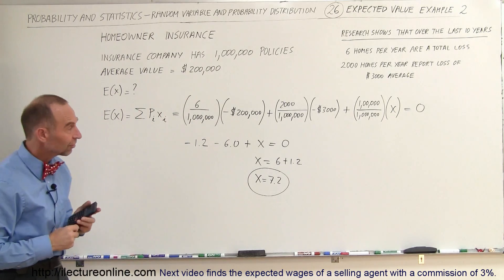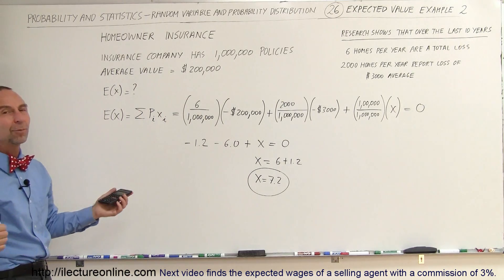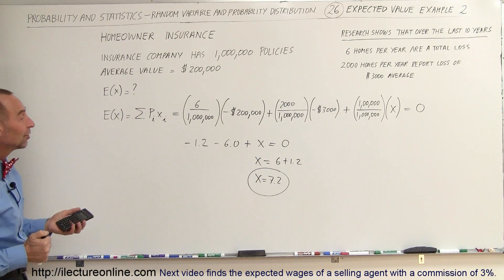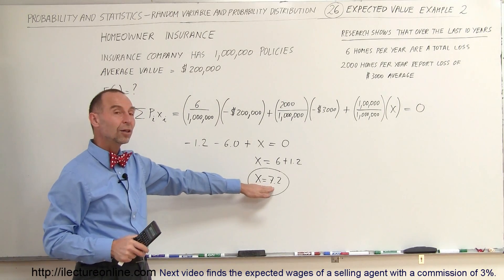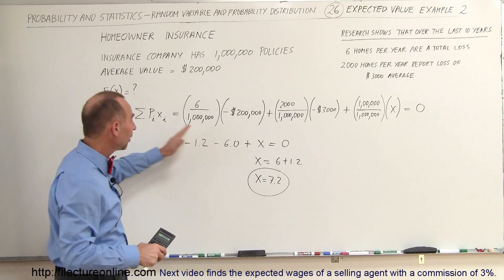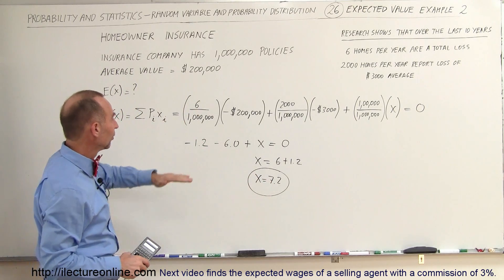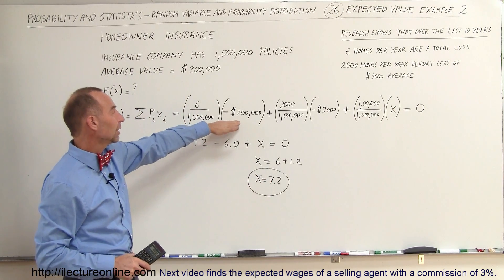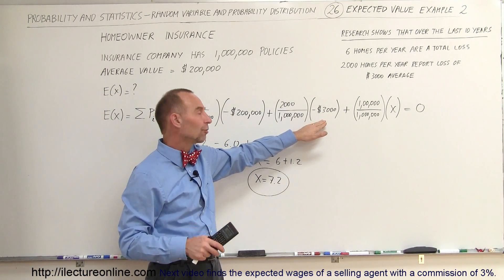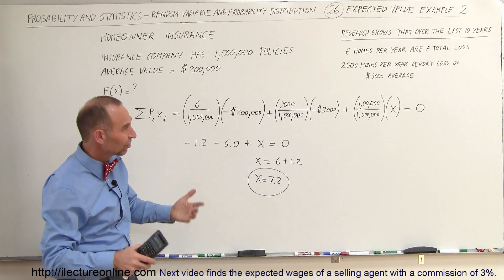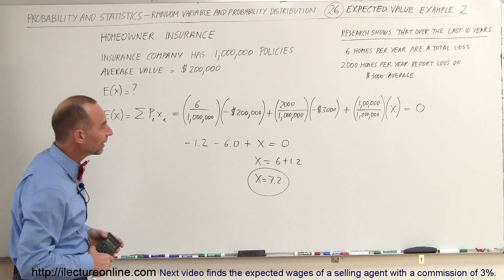So here's kind of an interesting statistic. Notice that they only would have to bring in $7.2 per homeowner to cover all the damage claims. To cover six homes being completely burned down, for example, and 2,000 homes claiming a damage of $3,000 of things that need to be replaced because of theft or destruction or something like that.